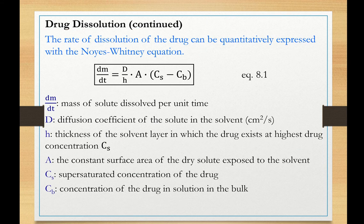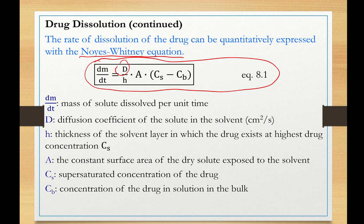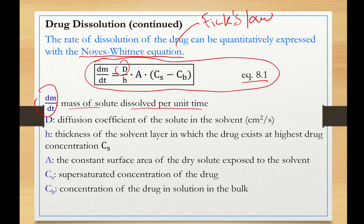The equation used to calculate the rate of dissolution and the diffusion coefficient is the Noyes-Whitney equation, which is the derivation of Fick's law. In equation 8.1, dm/dt is the mass of solute dissolved per unit time. D is the diffusion coefficient of the solute expressed in units of square centimeters per second.